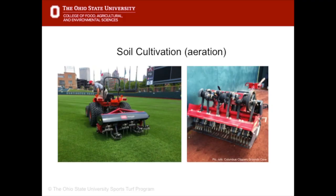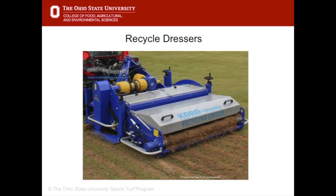To get the most benefit from a top dressing application, it is usually done in conjunction with some kind of soil cultivation like coring or tining. Poking a hole in the soil that is filled with a granular material like sand improves surface drainage capabilities. Some field managers like to apply top dressing first and then run the cultivator over the top to disperse the top dressing material down into the holes. A recent innovation in cultivation and top dressing is the recycler dresser. This machine pulls cores, pulverises the soil and then reapplies it as a top dressing in one pass.